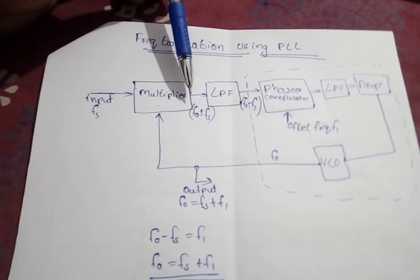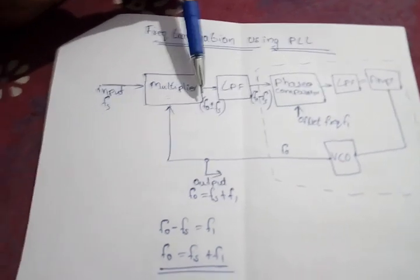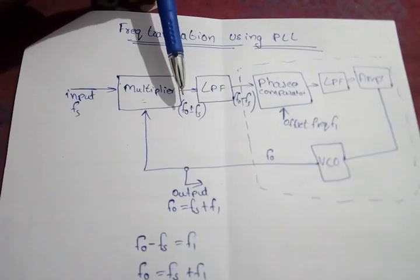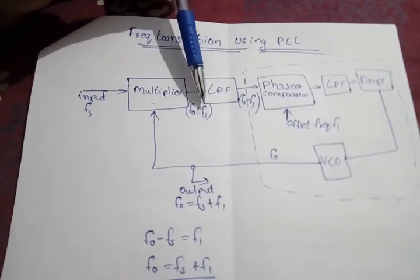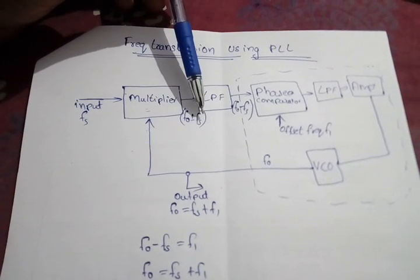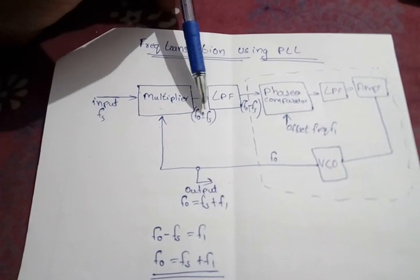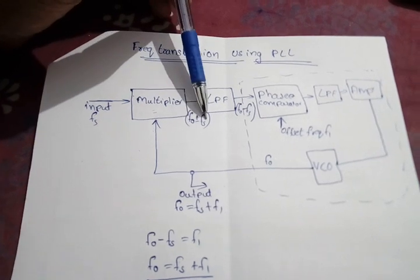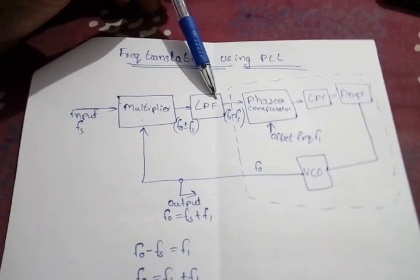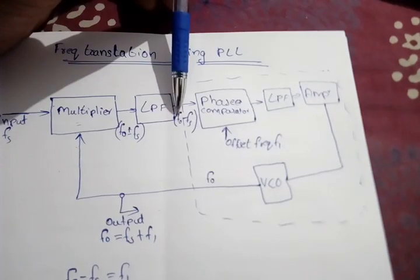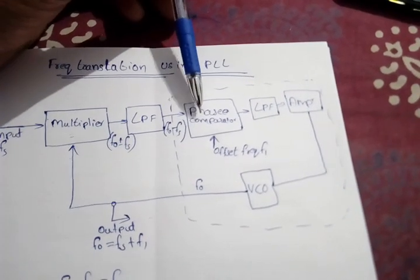Thus the multiplier or phase comparator produces an output. In the output there are two components: F0 plus FS and F0 minus FS. The low pass filter only passes F0 minus FS and rejects F0 plus FS. That F0 minus FS is then given to the phase comparator.